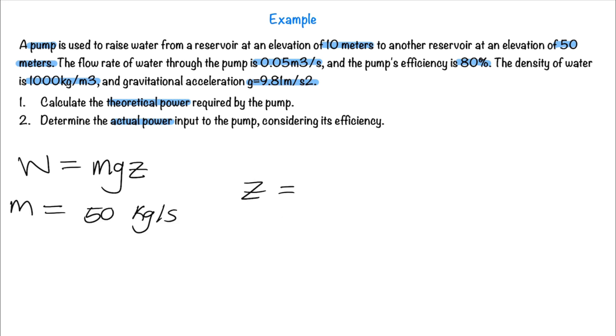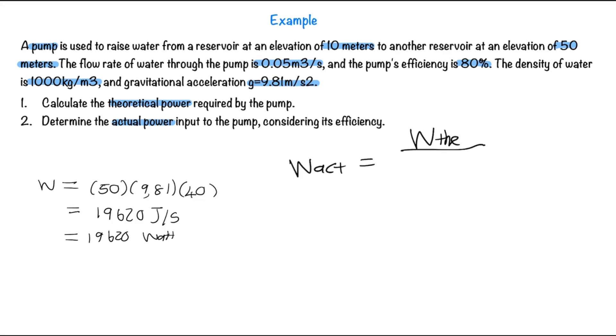Next we calculate the height difference, which is 50 minus 10, which is equal to 40 meters. We plug the values into our equation and get a work of 19,620 watts. Then to calculate the actual power needed, we just divide by the efficiency, which leads to the power being 24,525 watts.